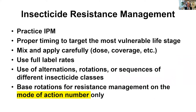How do we practice insecticide resistance management? First, practice IPM — use cultural controls, biological controls, and all the non-chemical things you can to control pest populations and prevent damage. Then follow very closely the proper timing to target the most vulnerable life stage; do not apply insecticides when they are not appropriate for the pest you're trying to control. Mix and apply carefully, and especially use the full label rate. Proper dose and coverage, if done correctly, will delay the onset of insecticide resistance.